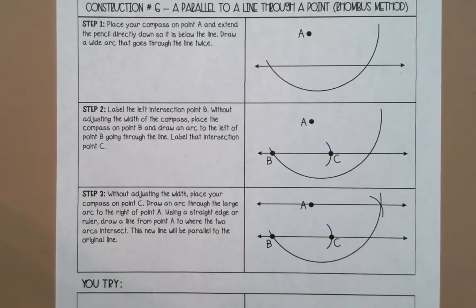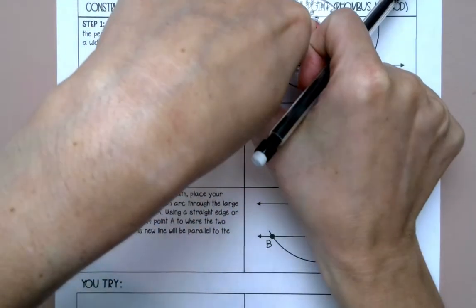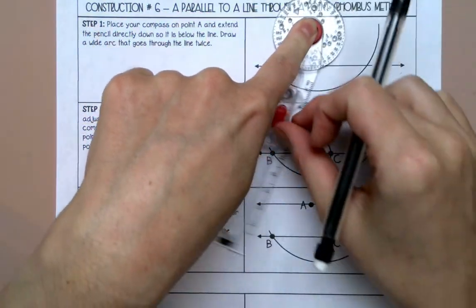The first thing you're going to do is put your compass on point A and draw a big arc that goes through the line twice.